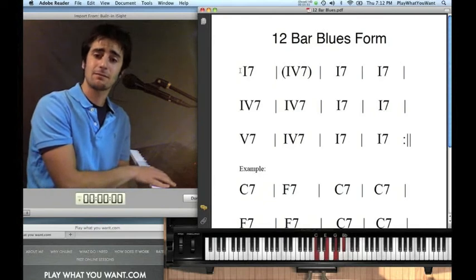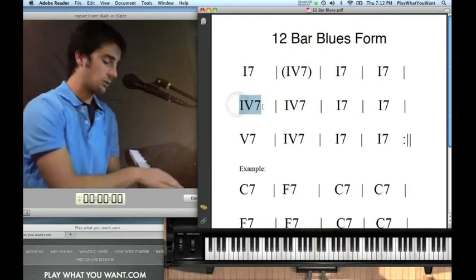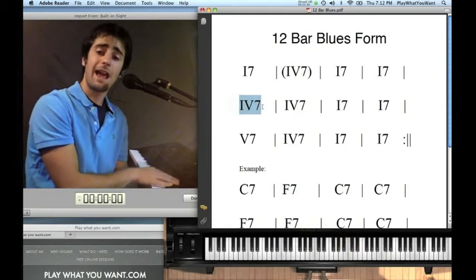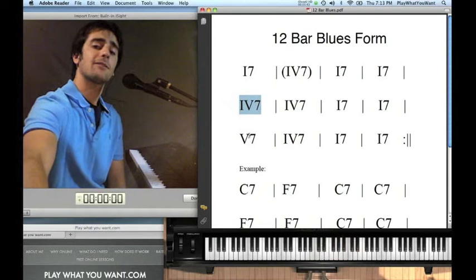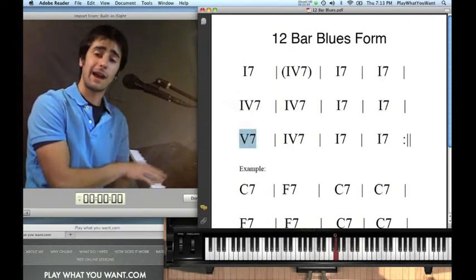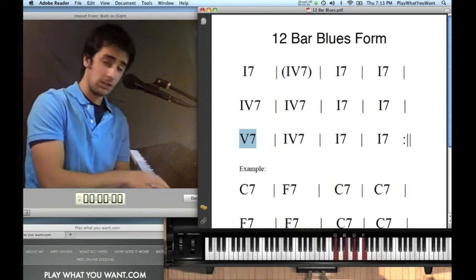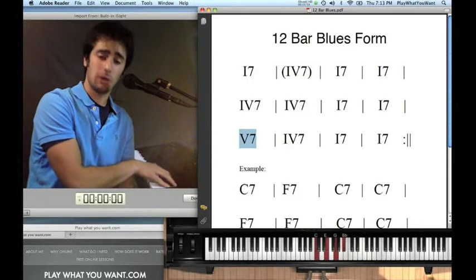Then we're back to C7. Measure five right here. We're back to F7 for two bars, and then C7 for two bars. Below that, we're at V7. So V7, count up from C: one, two, three, four, five is G. G7 goes down to F7, goes down to C7.